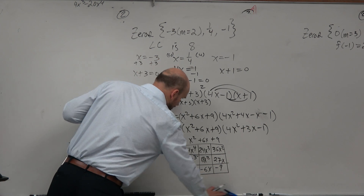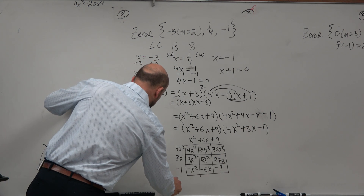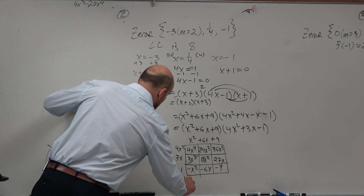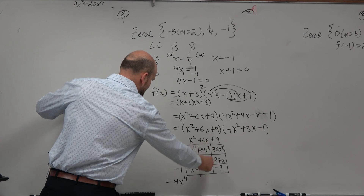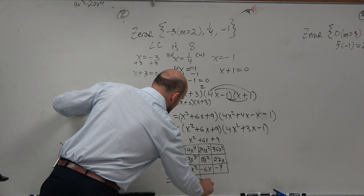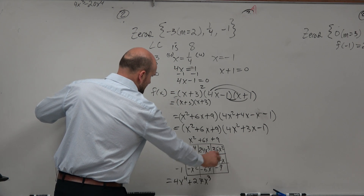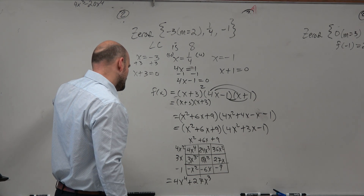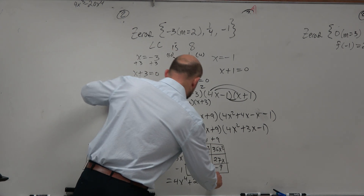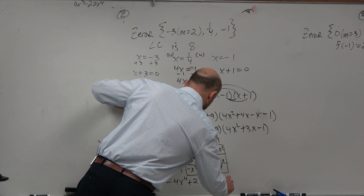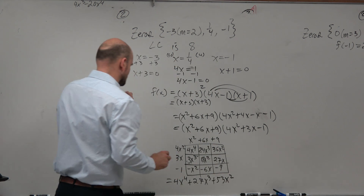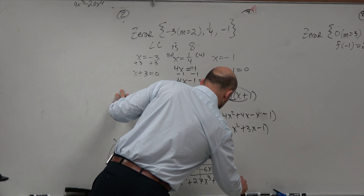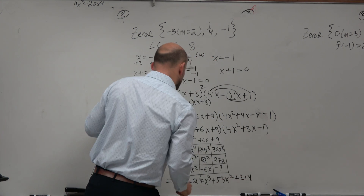Anyway, my final polynomial — remember, just combine your like terms on the diagonal. So that's 4x to the 4th, then 27x cubed, then 53x squared, then 21x, and then minus 9.